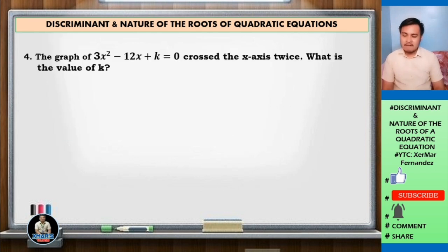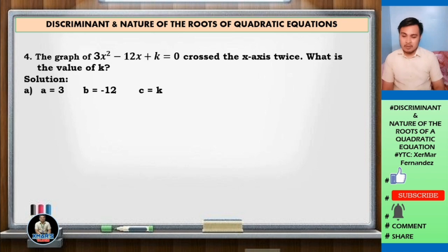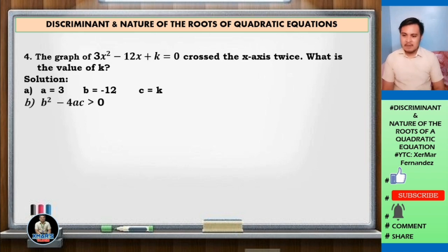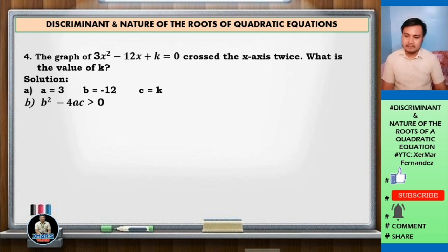Number 4: the graph of 3x squared minus 12x plus k equals 0 crosses the x-axis twice. What is the value of k? Identify a, b, and c: a equals 3, b equals negative 12, c equals k. If the parabola crosses the x-axis twice, the discriminant is positive, meaning the discriminant is greater than 0. So b squared minus 4ac is greater than 0.